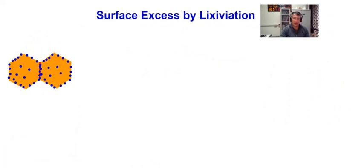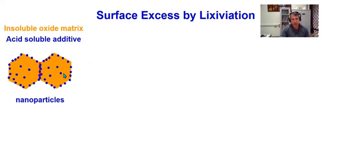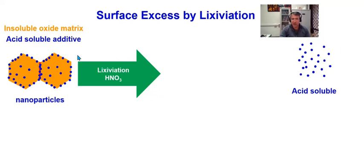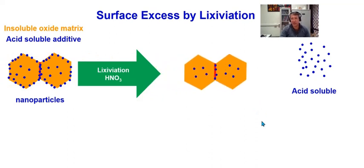Some years ago, we proposed a method to determine the surface excess by a selective lexiviation method. For nanoparticles — grain powder with its surfaces — we have an additive segregated on the surface and at grain boundaries, and some additive soluble in the bulk. We have an insoluble oxide matrix, and the additive is soluble in acid solution. By lexiviation in nitric acid, for example, it is possible to separate the atoms segregated on the surface from the atoms at the grain boundary and those soluble in the bulk.